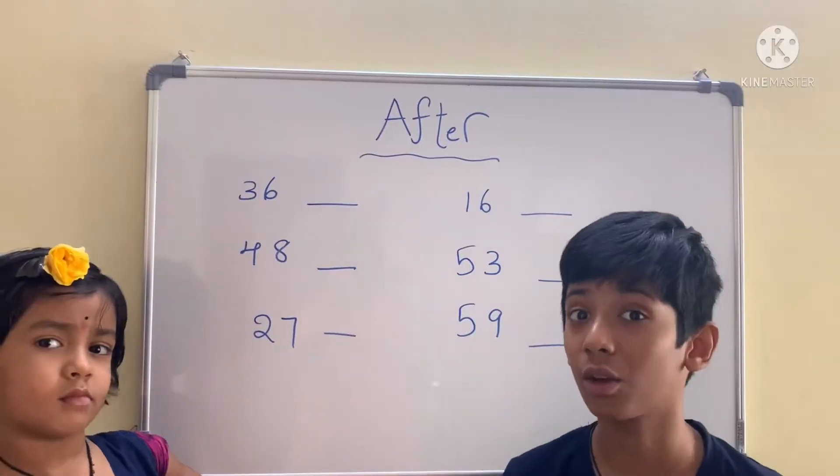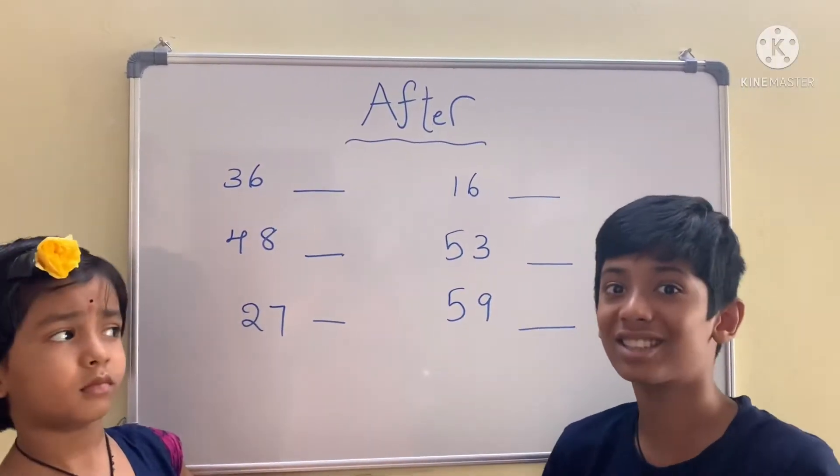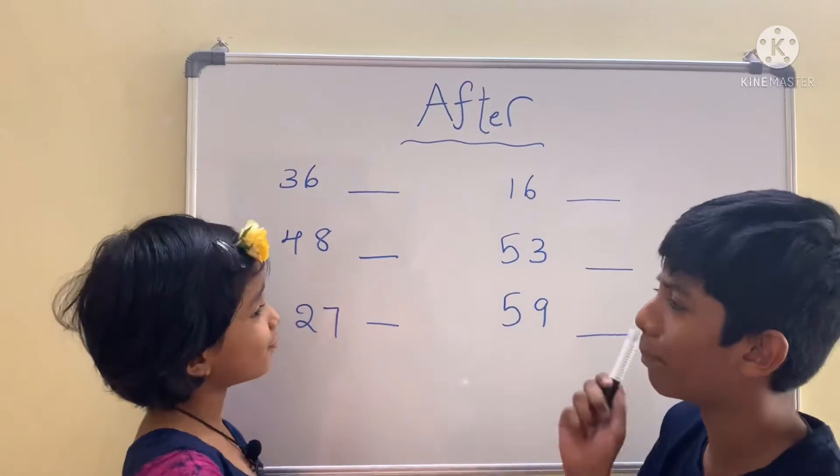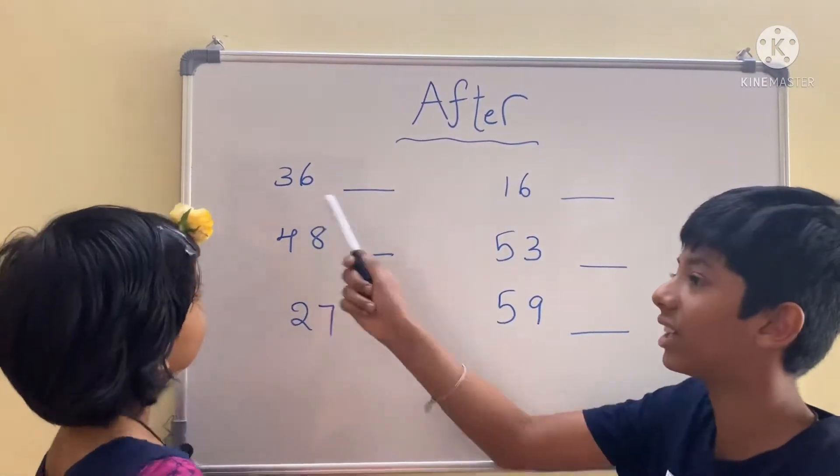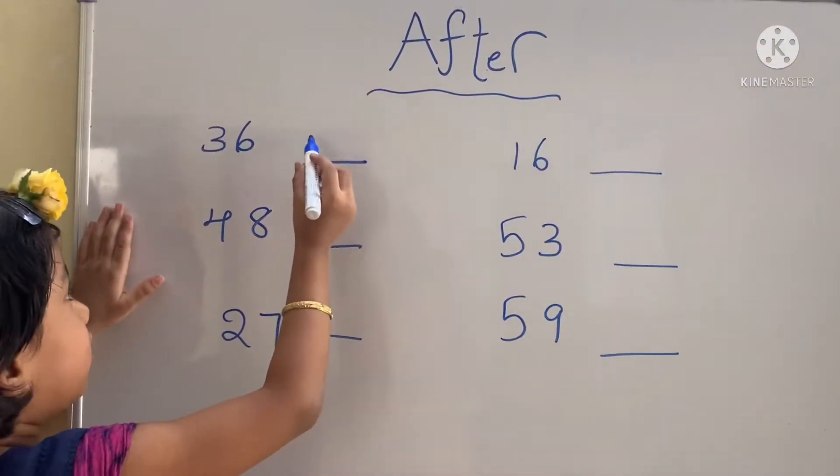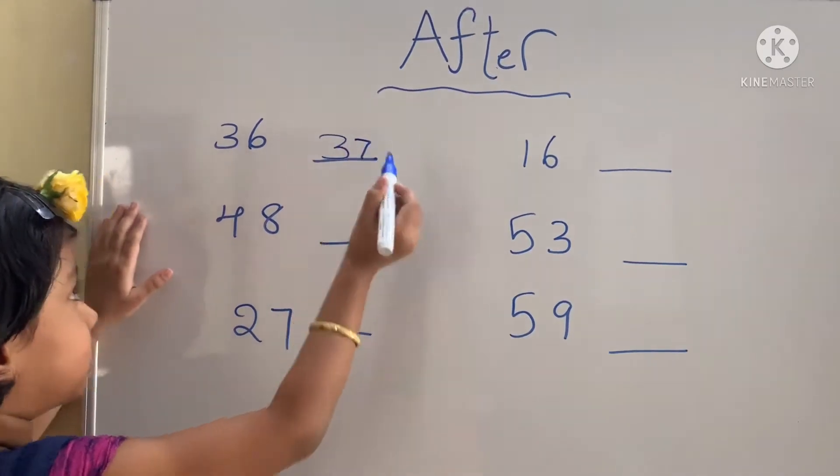Now we are going to do after numbers. Let's get started. Which number comes after 36? Three tens, seven ones, 37.